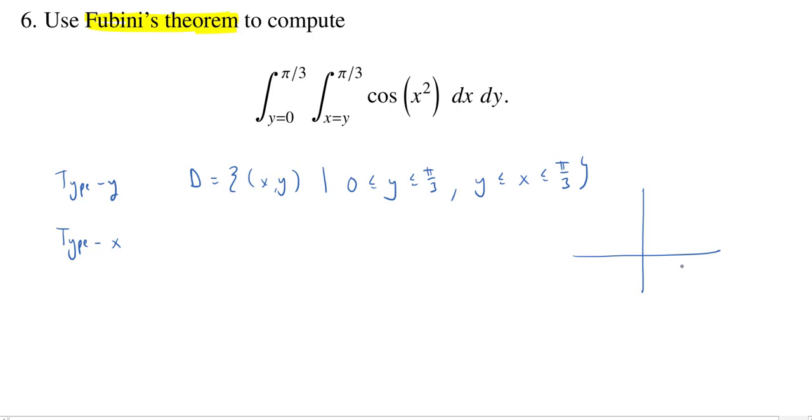So first, the y values go between 0 and pi over 3, so we'll get pi over 3 up here at the top. So y can go anywhere up and down between the x-axis up to pi over 3. Now what about the x? Well, it's going to always be at least as big as y, which means I need to draw in here the line y equals x. So that's just going to be this nice upward sloping line, slope 1.